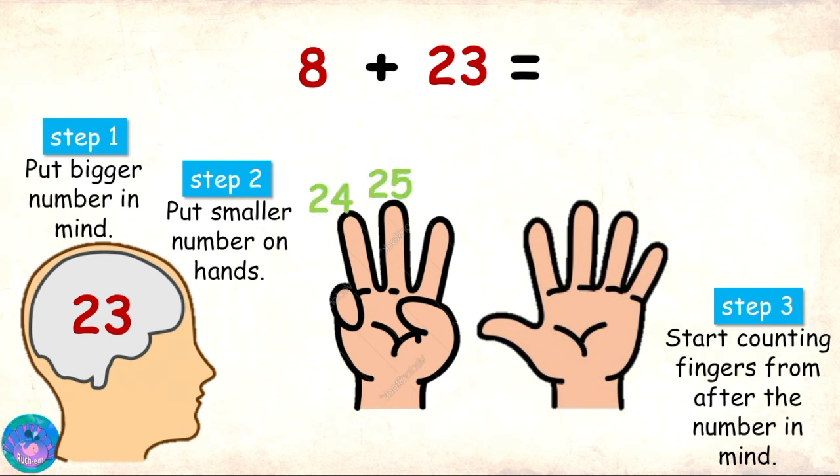24, 25, 26, 27, 28, 29, 30, 31. So, 8 plus 23 equals 31.